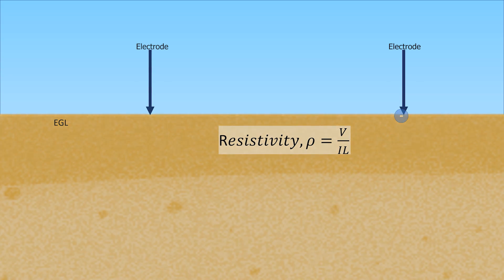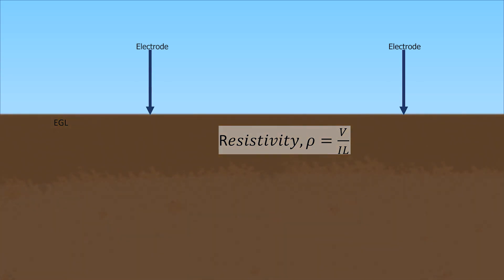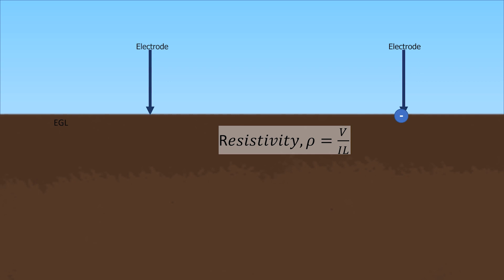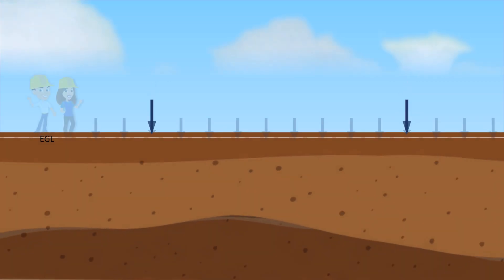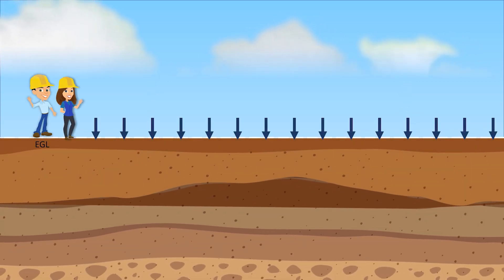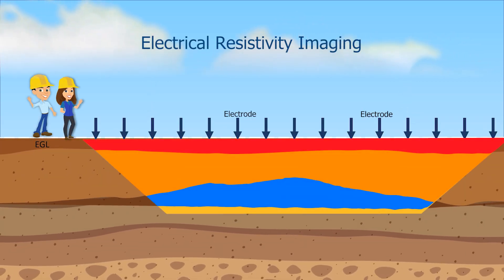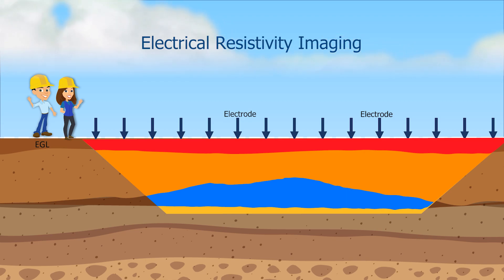On the contrary, the resistivity will be lower when the soil has more moisture and less air voids. As resistivity is a property of soil, if we map different resistivities in one image, it gives us a continuous soil profile.